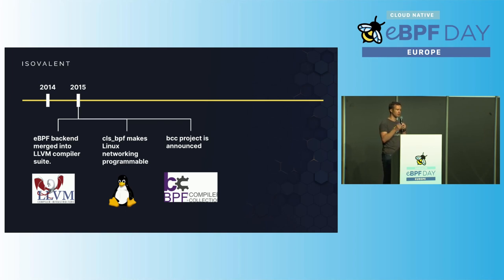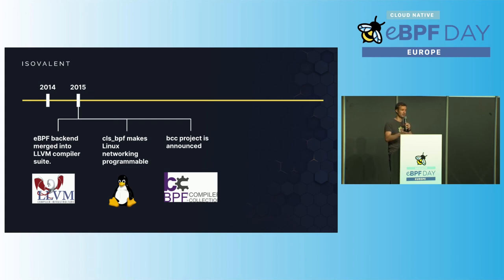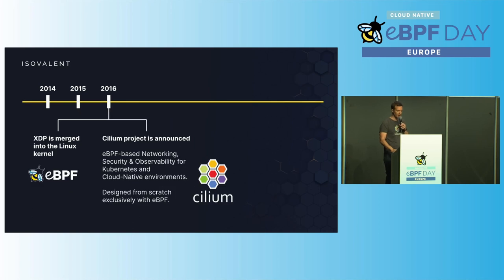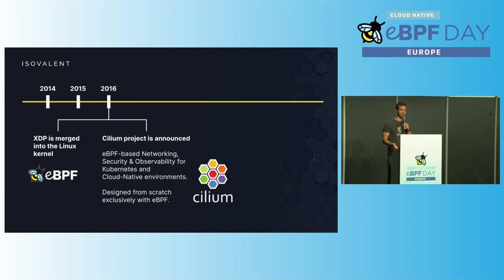BCC was the first higher-level end-user project around eBPF — a set of Python-based scripts to introspect systems and applications. Even today, BCC is massively used and covers a wide variety of use cases. A year later, XDP was merged — the high-performance networking layer of BPF that allows BPF to compete with technologies like DPDK. And in 2016, Cilium was announced.